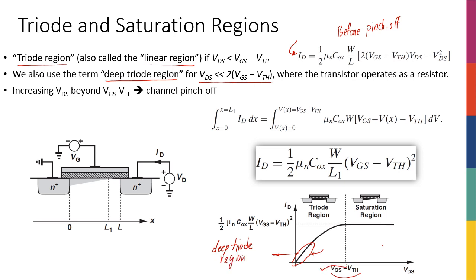But the entire thing here is called linear region, or let's call it triode region. And the current of the transistor or the drain-source current of the transistor expression looks like this.